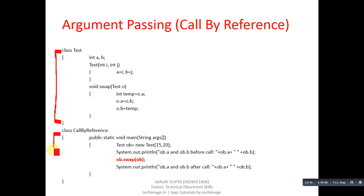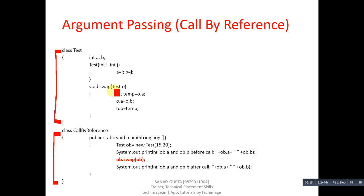In the call by reference program, there are also two classes: Test and CallByReference. In the Test class, there is a constructor receiving two arguments i and j, where i is assigned into a and j is assigned into b. This is a parameterized constructor. Then a swap method is defined which receives an object, demonstrating how we can receive an object of a particular class in a method.